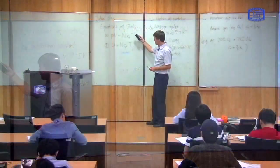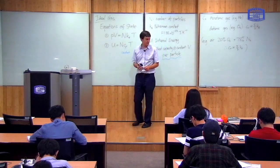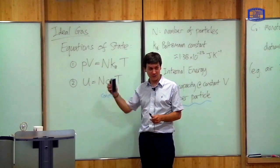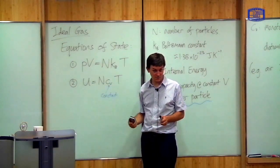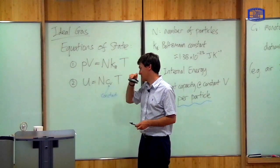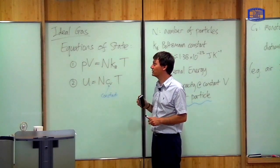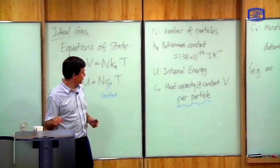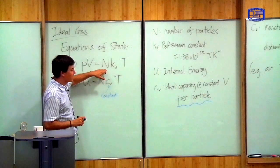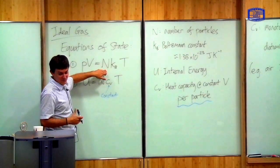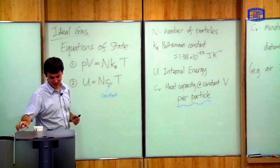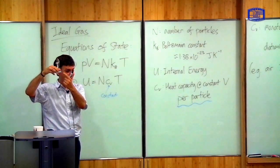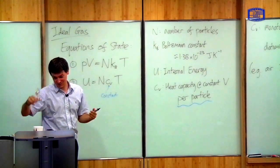These two equations completely define everything about the ideal gas. If I tell you that an ideal gas is used in a heat cycle, they enable you to calculate everything: how much heat goes in and out, how internal energy changes, and so on. However, they're not very practical so far because they require you to know the number of particles, and it's very difficult to count the number of particles — for example, inside this Stirling engine.